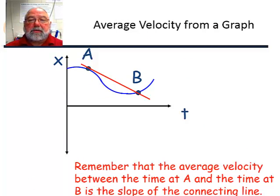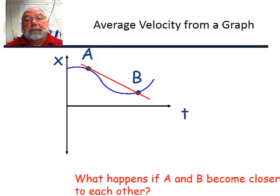Remember, this is just a review. Average velocity from the graph between time at A and time at B is the slope of the connecting line or it's called the secant line. So what happens if points A and B get closer and closer together and the time interval between them becomes smaller and smaller and smaller? Well, let's see. I have a little animation here.